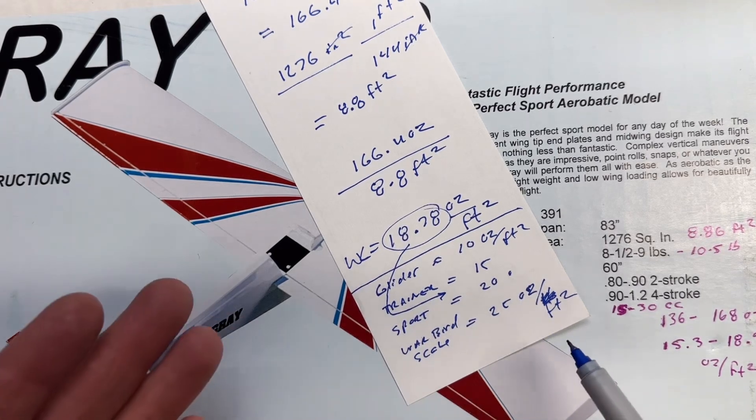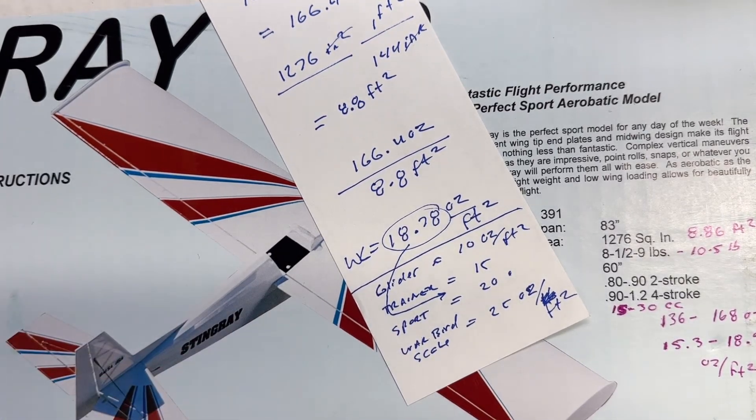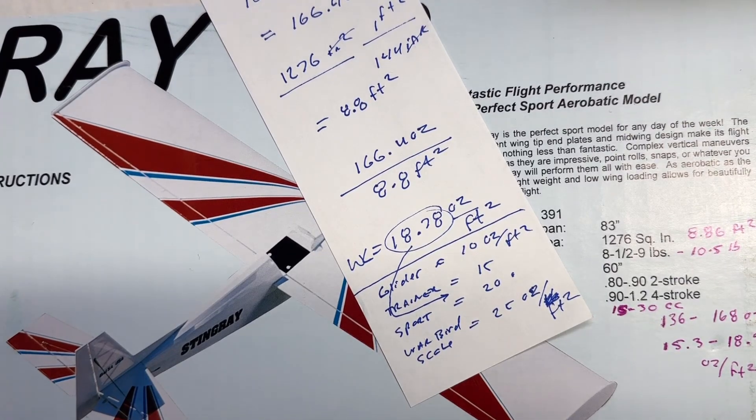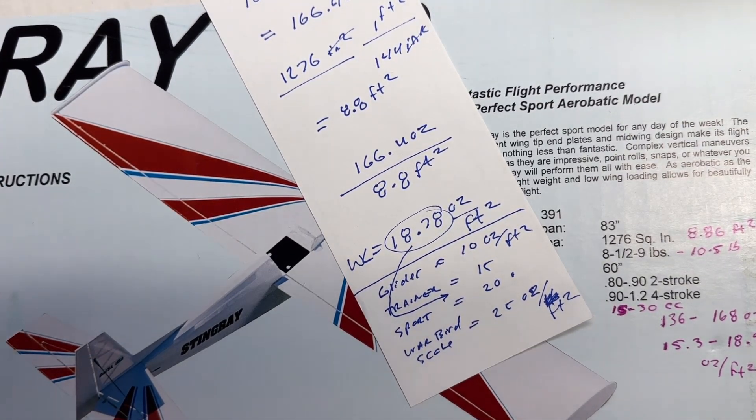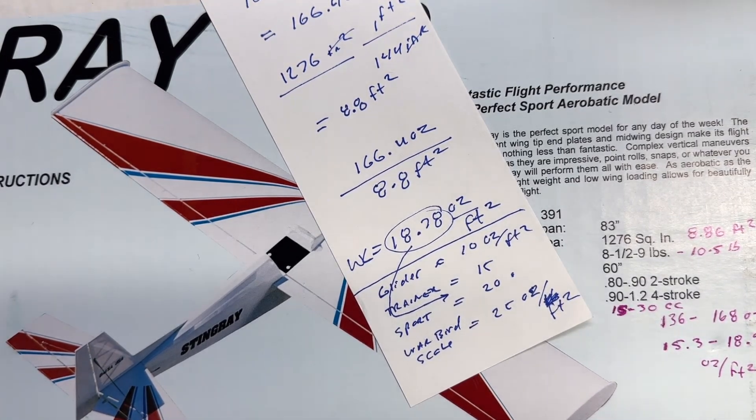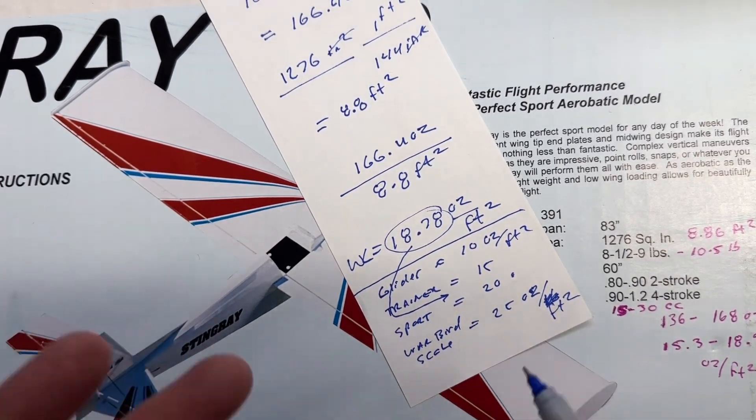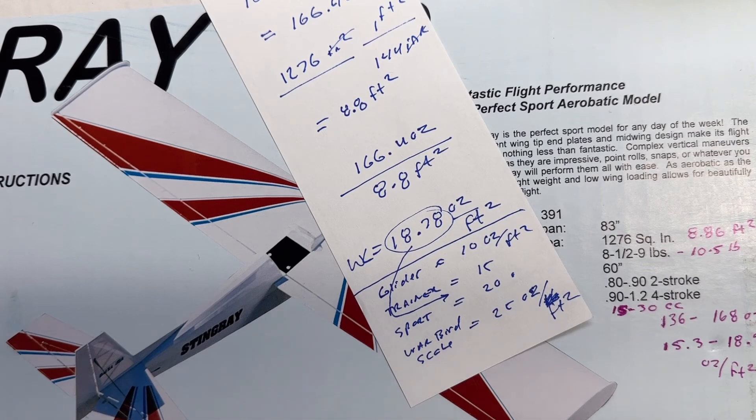So those are the two ends of the spectrum. And then in between that, we have our trainer and then we have our sport planes. So the trainer is obviously going to be a little bit more than a glider, but a trainer, you expect it to be something that you can actually handle because it is just a trainer. So it has a relatively lower wing loading, which gives you time to think when you're flying. And then of course, the sport is in between your trainer and then something like your scale planes.